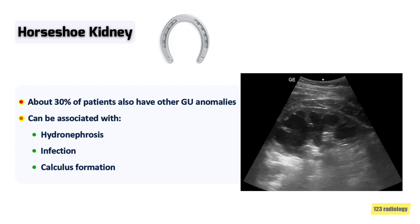Approximately 30% of patients with horseshoe kidneys also have other urinary tract anomalies. Several complications can be associated with horseshoe kidney. The most common are hydronephrosis, infection, or stone formation. Recurrent infection occurs due to reflux and UPJ obstruction. Nephrolithiasis occurs due to stasis and infection.